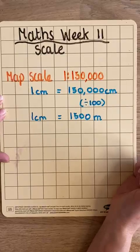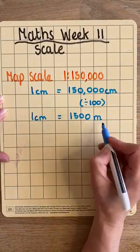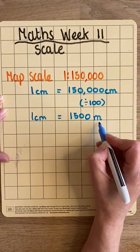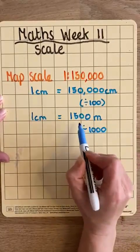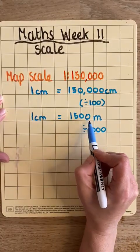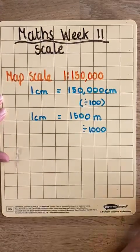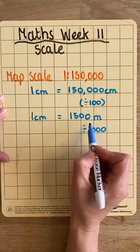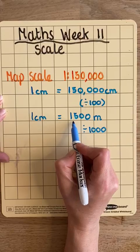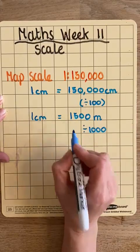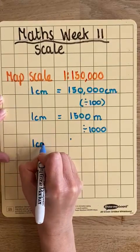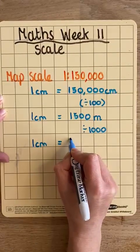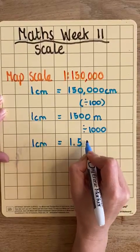And now I can change that to kilometres, because I know that there are 1,000 metres in a kilometre. So, I'm going to now divide this by 1,000, which would mean each of my digits moves three columns to the right, which would leave the decimal point between the 1 and the 5. So, my 1 centimetre, in reality, is worth 1.5 kilometres.